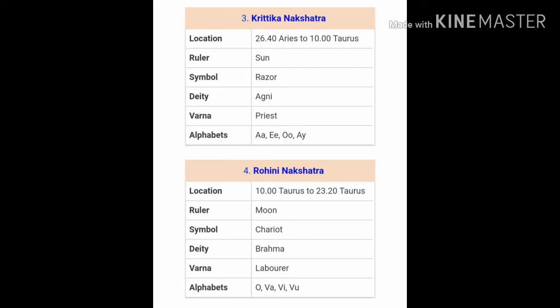The third Nakshatra is Kritika Nakshatra, ruled over by the Sun. The Sun is always associated with being the universal soul, power, and the king of all planets, and also associated with ego. All these characteristics come into the Kritika Nakshatra. People of Kritika Nakshatra generally tend to gain a lot of power in life, but at the same time they develop a lot of ego. Generally these people are warriors and very powerful people.